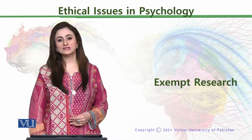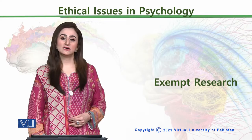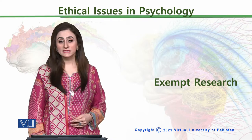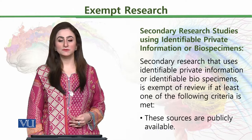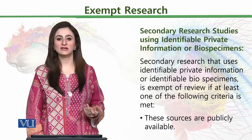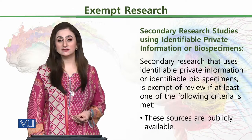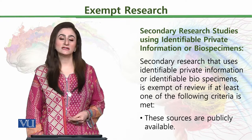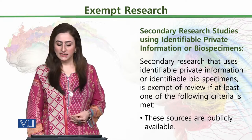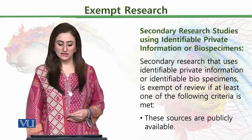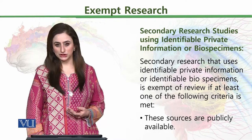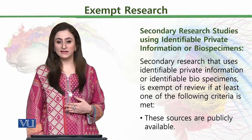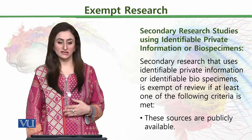Generally, the researches are not as simple as the early students of psychology or beginner researchers would do, but exempt research could involve researches which are of higher and secondary level. The secondary research study using identifiable private information or biospecimen is another example. Secondary research that uses identifiable private information or identifiable biospecimen is exempt of review if at least one of the following criteria is met.